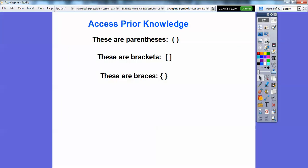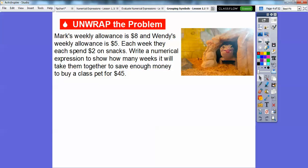So we're going to be talking about these kind of parentheses. These parentheses we're used to right here. We'll use these things that are called brackets and use these things that are called braces. They're all parentheses right there. We just have several inside the other. So Mark's weekly allowance is $8 and Wendy's weekly allowance is $5. Each week they each spend $2 on snacks. So we're going to write a numerical expression to show how many weeks it will take them together to save enough money to buy a class pet for $45. Look at that class pet.